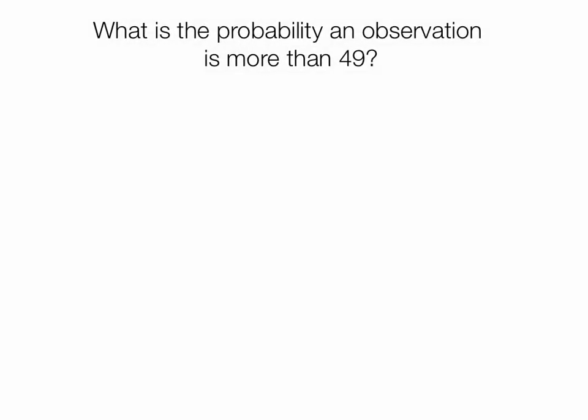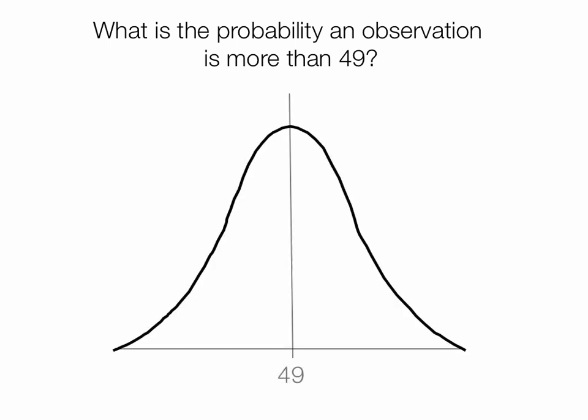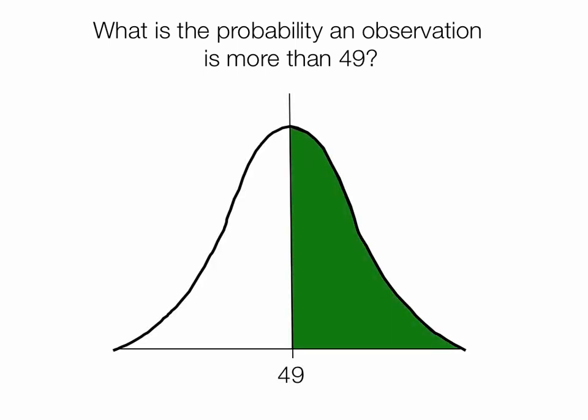What is the probability an observation is more than 49? Pretty straightforward. 50%. 49 is right in the middle.